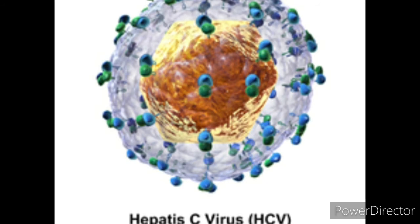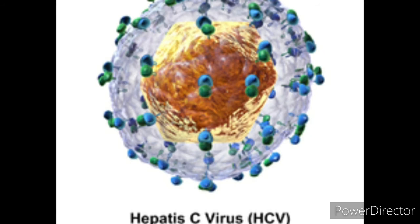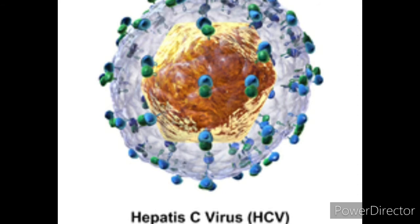Hepatitis C virus belongs to the Flaviviridae family and contains single-stranded RNA as its genetic material. It is spread through sexual and percutaneous routes. In the HCV rapid card test, the T-line is coated with recombinant HCV antigens.